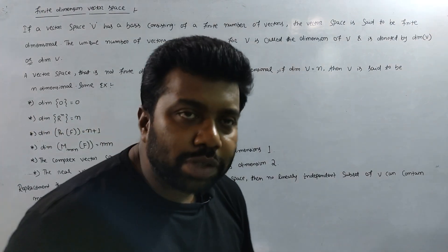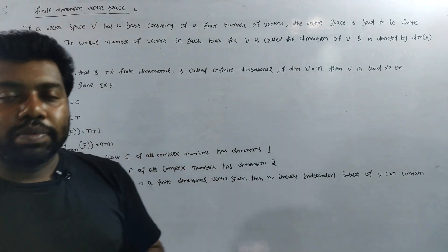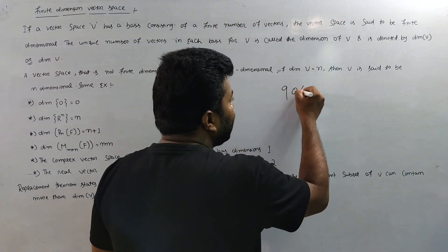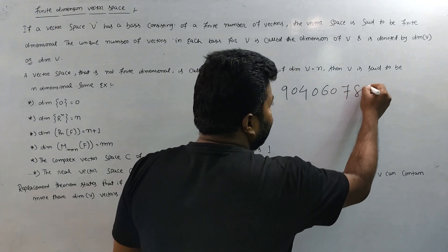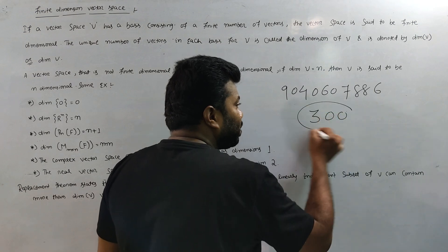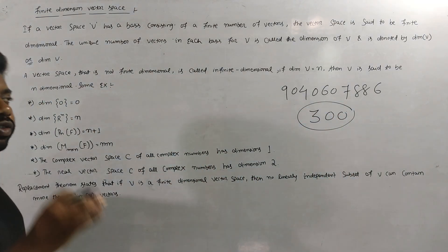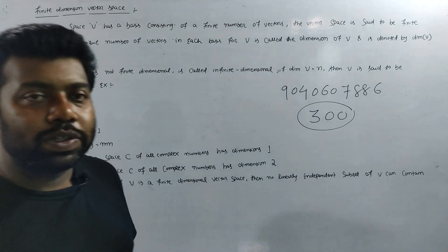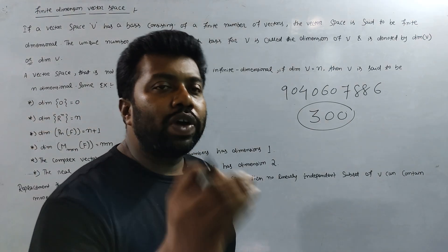The video lecture, the notes, the selection questions, etc. You can contact this number: 9040607886. You can read only 300 rupees per paper. If you go offline, the total course is 1200 rupees and the course is completed.